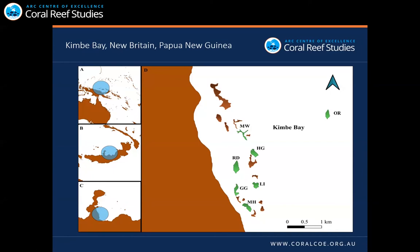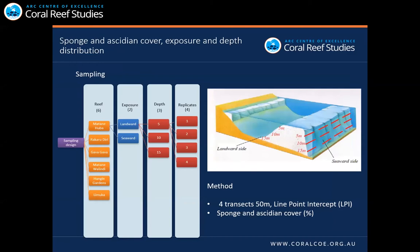The main goal of my research was to describe the community of sponges and ascidians in Kimby Bay and assess changes in cover by exposure and depth. You can see the study area highlighted in green on the map, showing the inshore reefs that were studied. In the sampling design, within each reef we selected the lagoon side and the seaward side — the lagoon side is usually more exposed to sediments and wave action. We sampled three depths: 5, 10, and 15 meters, and within each depth we established four transects. The method used to measure sponge cover was the line point intercept: each transect was 15 meters long with 100 random points.